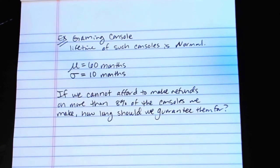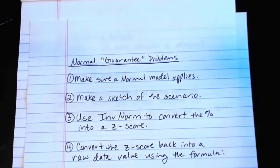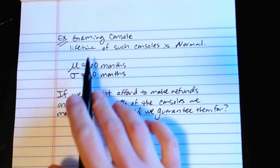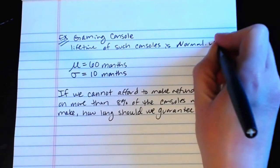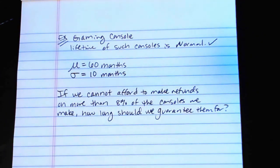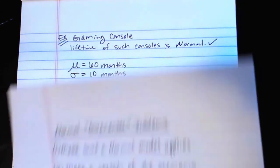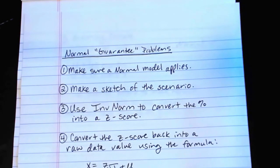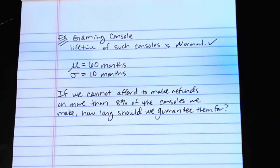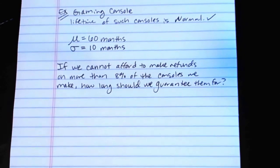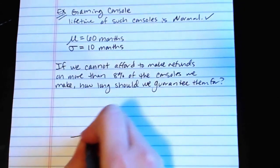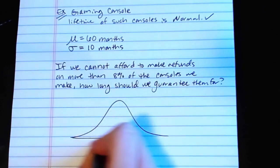We're going to refund any console that fails within the guarantee period, but we can't afford to refund more than eight percent of the consoles. So we need to figure out how long do we actually guarantee them for. First, we're looking back at our process. Make sure a normal model applies. It says right here, lifetime of such consoles is normal. Check. We know that a normal model applies. Second, we make a sketch of the scenario.